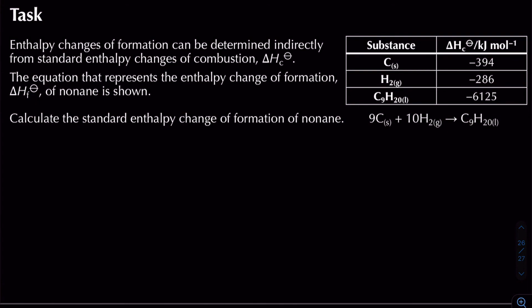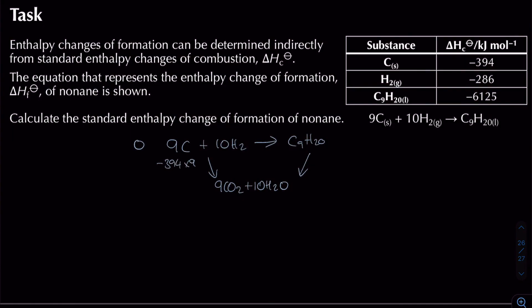Final example: calculating the standard enthalpy change of formation of nonane (C₉H₂₀) from combustion data. The formation equation is 9C + 10H₂ → C₉H₂₀. Burning both reactants and the product gives 9CO₂ and 10H₂O. Reactants: minus 394 times 9, plus minus 286 times 10.